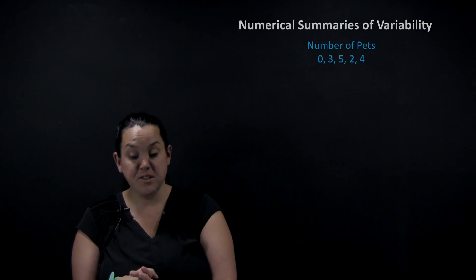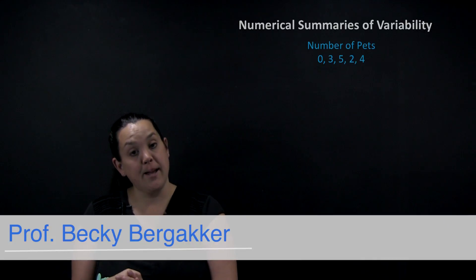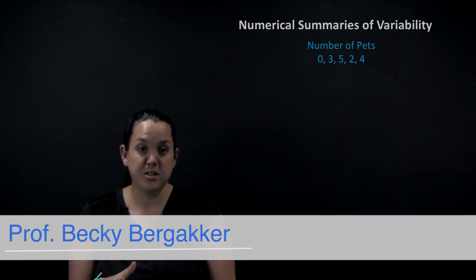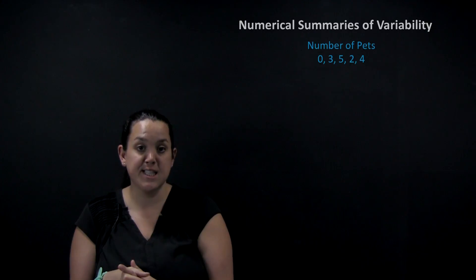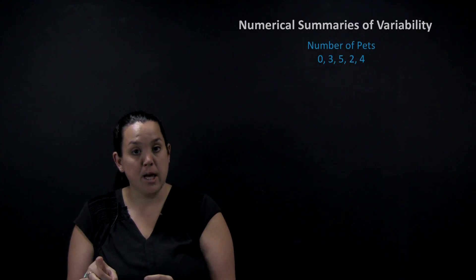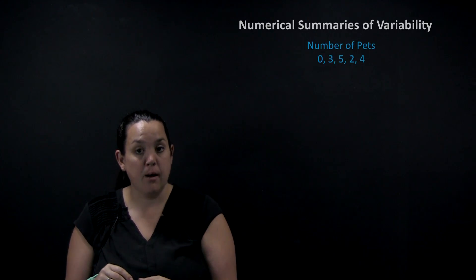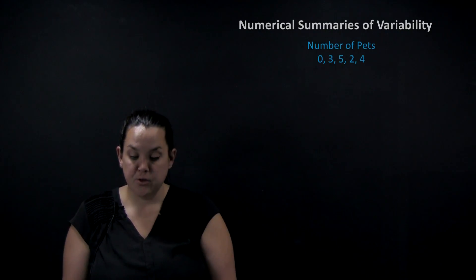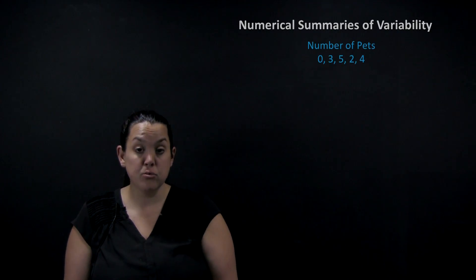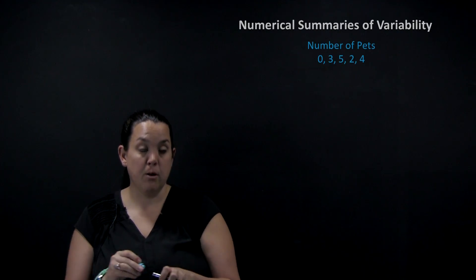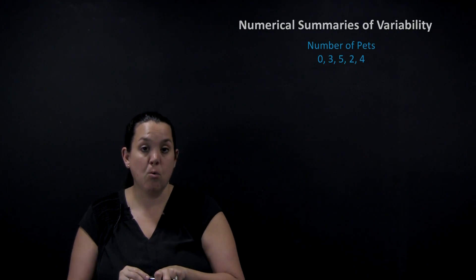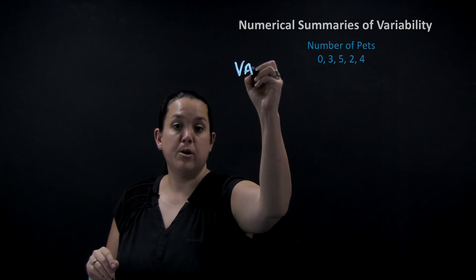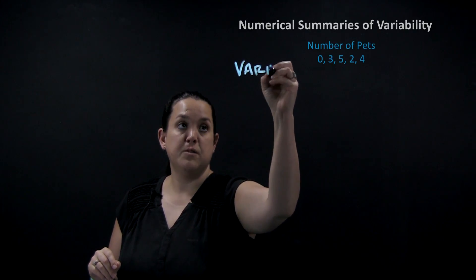Today we're continuing our discussion on the analysis of one quantitative variable, still looking at descriptive statistics. Specifically today we're going to look at measures or summaries of variability. There are two summaries of variability that we're going to talk about: one is variance and the other is standard deviation.